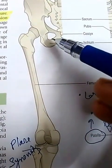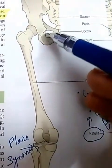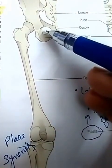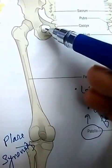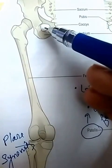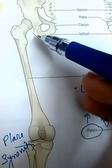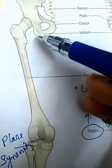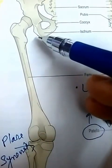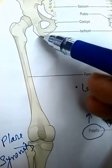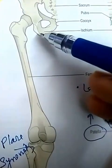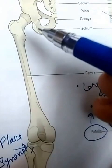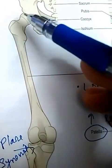The obturator foramen is large and oval in males, whereas it is small and triangular in females. The ischial tuberosity gives attachment to the adductor magnus as well as the hamstring muscles. We will study this in more detail later.